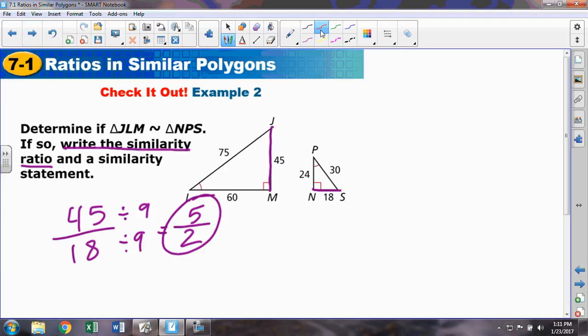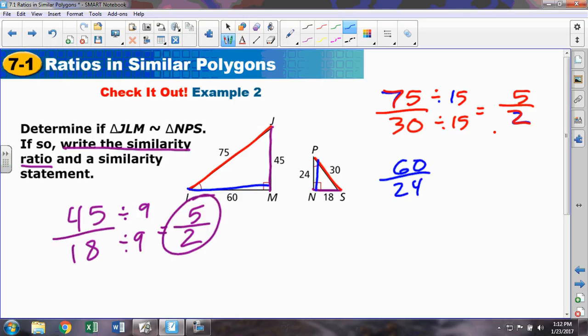We did not have to pick small with small. If we wanted to, we could use any pair of corresponding sides. If we wanted to take the big side with the big side, 75 with 30, both of those have a common factor of 15, which gives you 5 to 2. If we wanted to take medium with medium, we could have done it that way. Dividing out by the common factor of 12, it's still the ratio of 5 to 2. It doesn't matter which pair of corresponding sides you take. We just need one of them.